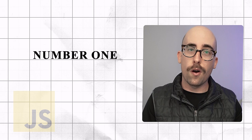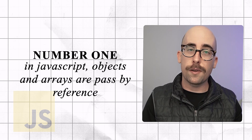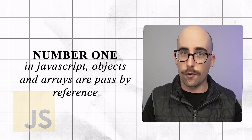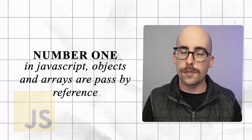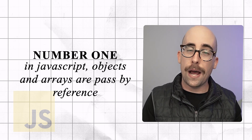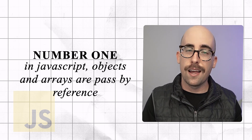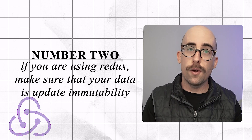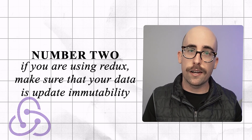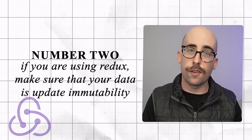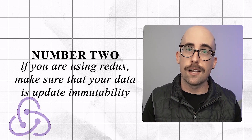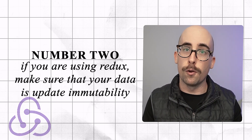So at the end of the day, remember: number one, in JavaScript, objects and arrays are passed by reference; and number two, if you're using Redux, you need to make sure that your data is updated immutably.